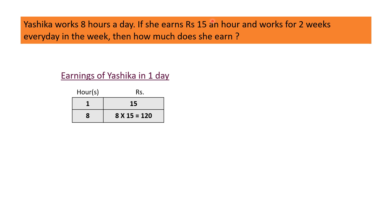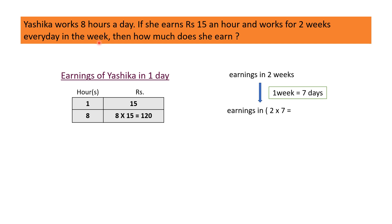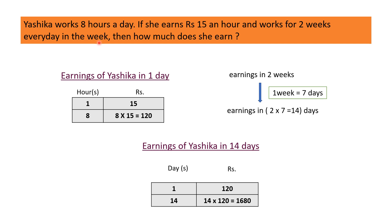The next part of the question is: she walks for 2 weeks every day of the week. Let's find out her earnings in 2 weeks. We know that 1 week equals 7 days, so earnings in 2 weeks means earnings in 2 into 7, that is 14 days. In 1 day Yashika earns Rs.120, so in 14 days she will earn 14 into Rs.120, that is Rs.1680. She earns Rs.1680 in 2 weeks.